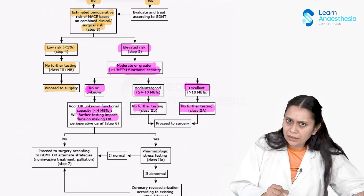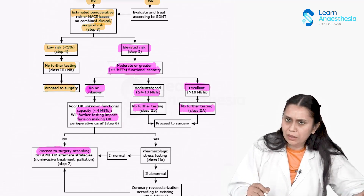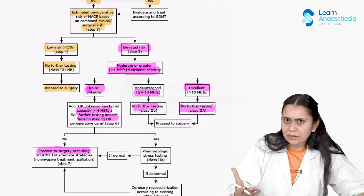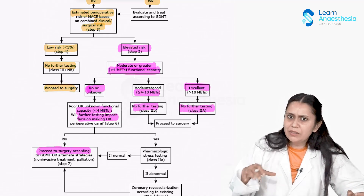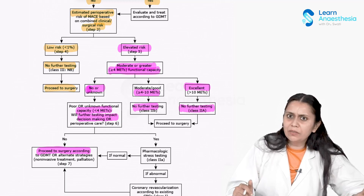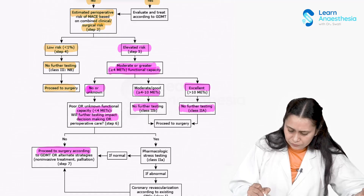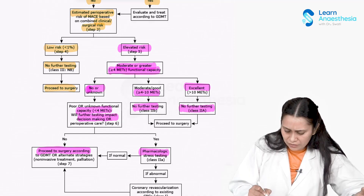If on further testing nothing positive is found, we can proceed to surgery according to goal-directed medical therapy. Alternatively, we can go for alternate strategies — palliative strategies — for patients with poor functional status and elevated risk, instead of going for surgeries associated with higher risk. If the patient cannot undergo normal stress echocardiography, then pharmacological stress testing can also be done.